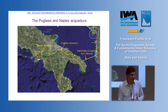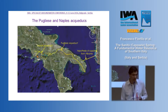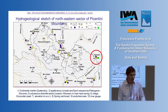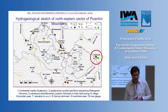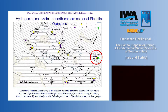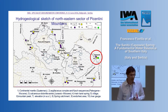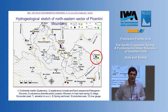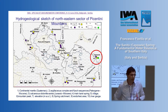This is an overview of the Picentini mountains, which feed the Pugliese Aqueduct but also the Aqueduct of Naples, which I will show in the next presentation. This is a simple sketch of the northern side of the Picentini mountains. The Caposele spring is fed by the Cervialto karst massif, which is characterized by wide endoraic areas that play an important role in recharge processes.